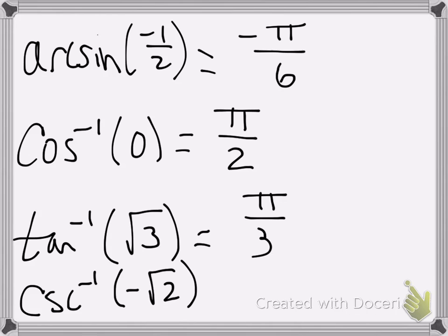And one more, cosecant inverse of negative root 2. By the way, this would be the same thing as the arc sine of negative root 2 over 2. If you take the reciprocal of negative root 2, you get negative root 2 over 2. So I believe that'll be at negative pi over 4.